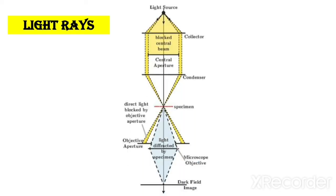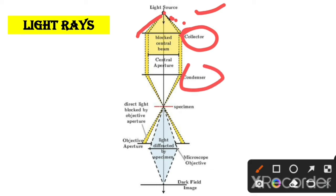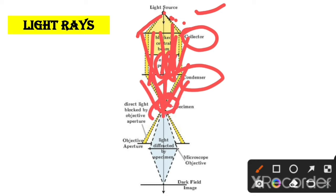Now let's see how light rays work in the compound microscope. Light comes from the light source at the top and is collected by the condenser. The collected light is directed so that only specific light is transferred towards the specimen. After passing through the specimen, light diffraction occurs, and that image is captured by the eyepiece — that is the mechanism of light rays in compound microscopy.